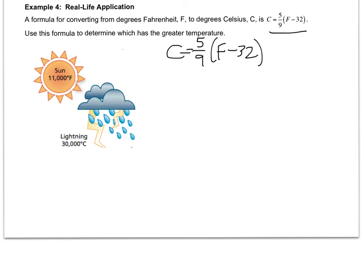So let's plug in the 11,000. And because it's Fahrenheit, it goes in for F. So C equals 5 ninths times 11,000 minus 32. Can you pause the video and solve that, please? You should have 6093.3 repeating.